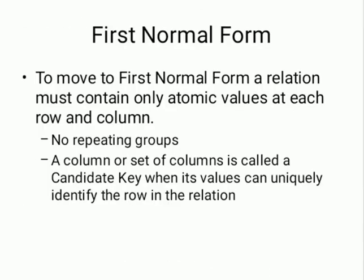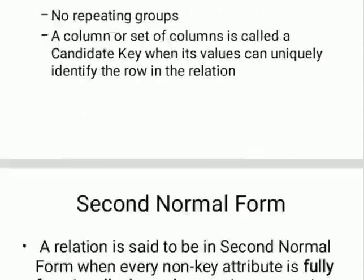First Normal Form: to move to first normal form, a relation must contain only atomic values at each row and column — no repeating groups. A column or set of columns is called a candidate key when its value can uniquely identify a row in the relation.